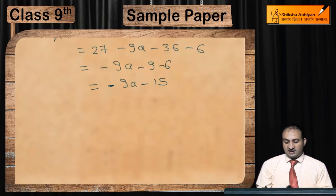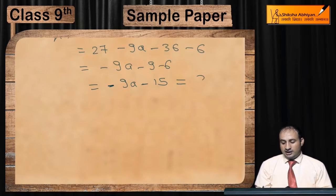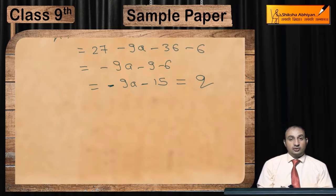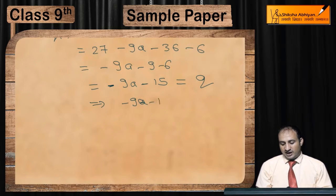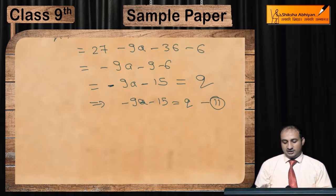According to the question, this equals q. So: -9a - 15 = q. Take this as Equation 2.